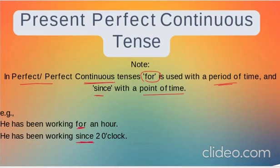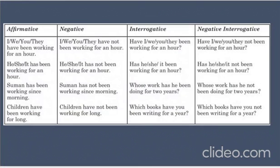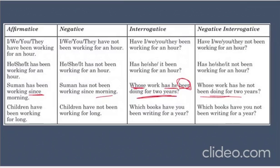Examples of Present Perfect Continuous: 'I have been making videos for two hours' / 'I have been making videos since 9 AM.' 'Someone has been working since morning' (affirmative). 'Someone has not been working since morning' (negative). 'Whose work has he been doing for two years?' (interrogative) — note that 'been' comes after the subject in interrogative sentences.